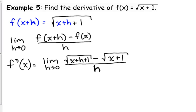Now, if we were to just plug in h right now, what would happen? We would get 0 over 0. If we just plugged in 0 for h, we would get 0 over 0. The top would give us the square root of x plus 1 minus the square root of x plus 1. That's 0. The bottom would give us 0. So we've got to do some kind of algebraic manipulation to fix this problem.